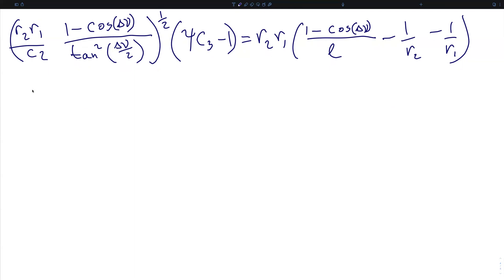To clean this up a little bit, we note that the half angle tangent, tangent of delta nu over 2, is equivalent to 1 minus cosine of delta nu over sine of delta nu, a substitution we've previously used.